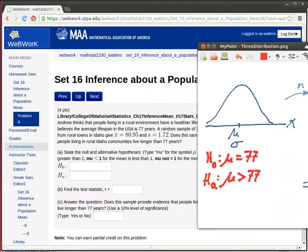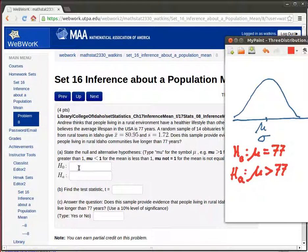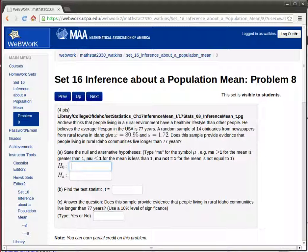So they'll ask us to record that information here, which we can do. Mu is equal to 77 and mu is greater than 77 is his hypothesis.